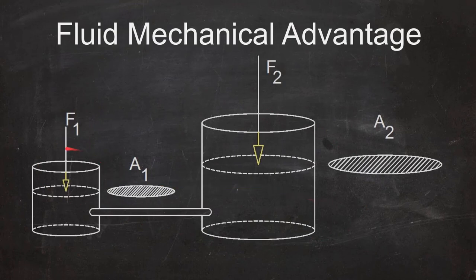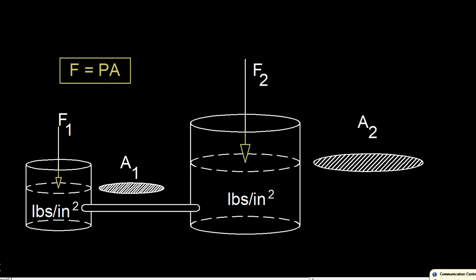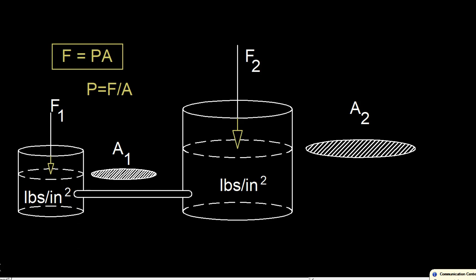You have a force on this side across a small cross-sectional area. You apply this force to this cross-sectional area and the equation we're using is F = PA. To solve for pressure, we rearrange to get P = F / A.